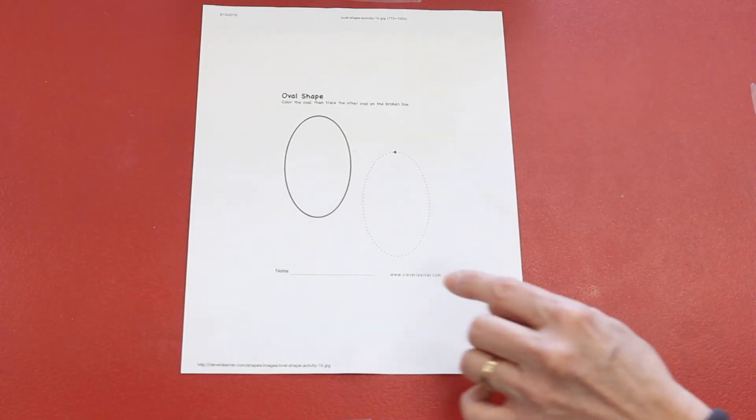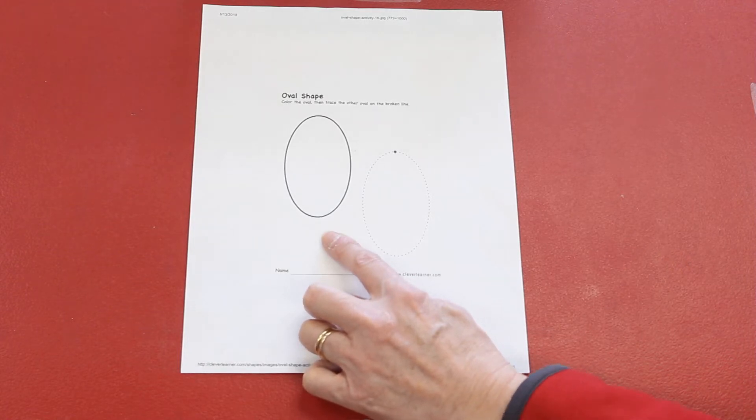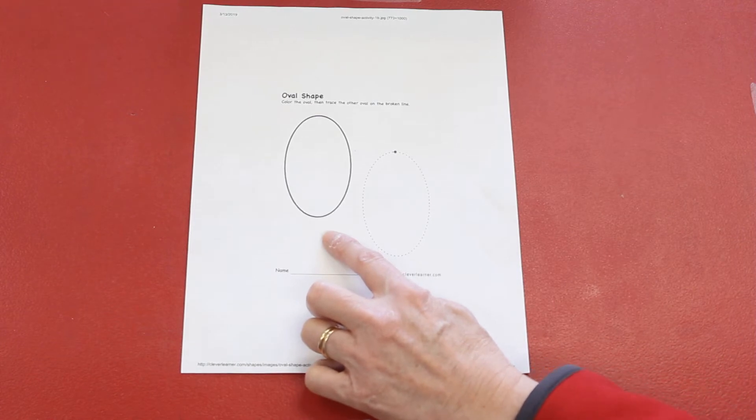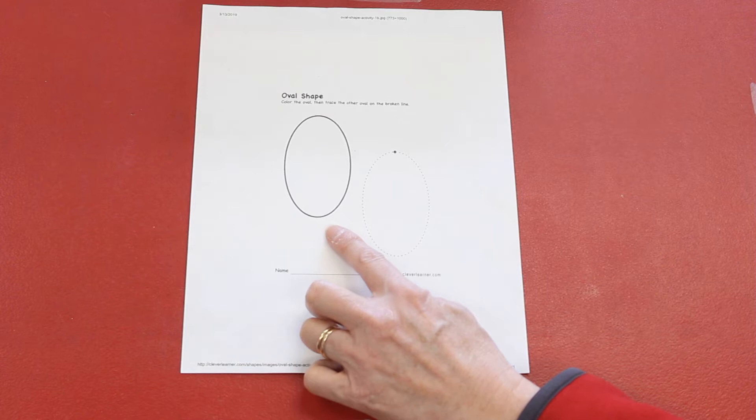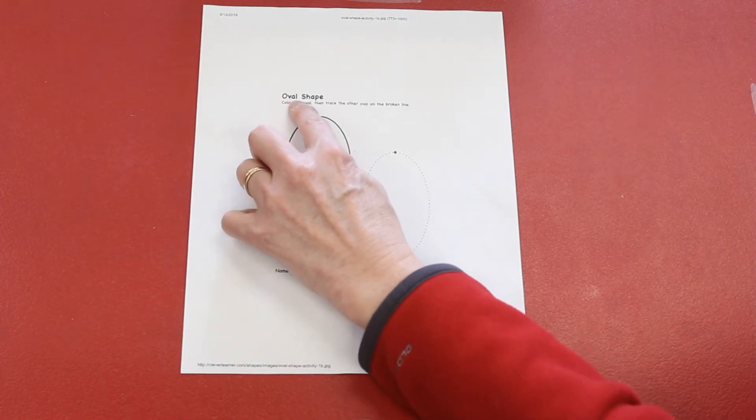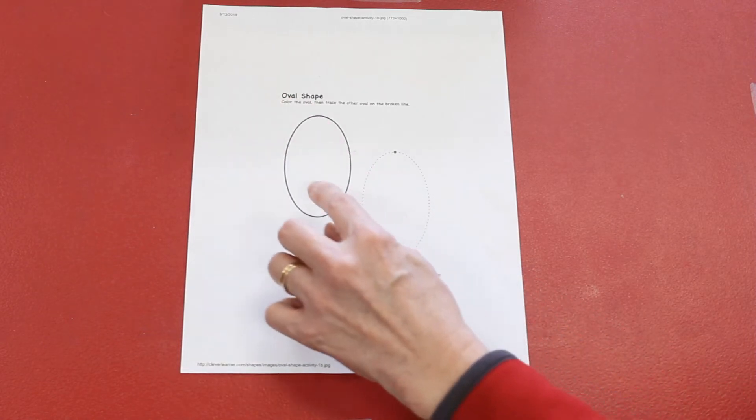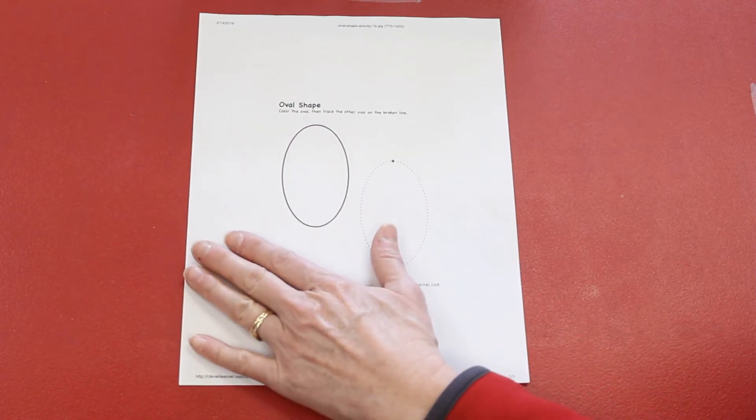All right, can you tell Mrs. Reagan what shape you see on your paper? This is an oval. That's right. What is the beginning sound on oval? Yes, the oval actually begins with the letter O. In this word, oval, the O actually says its name. This is an oval. This is the oval shape.